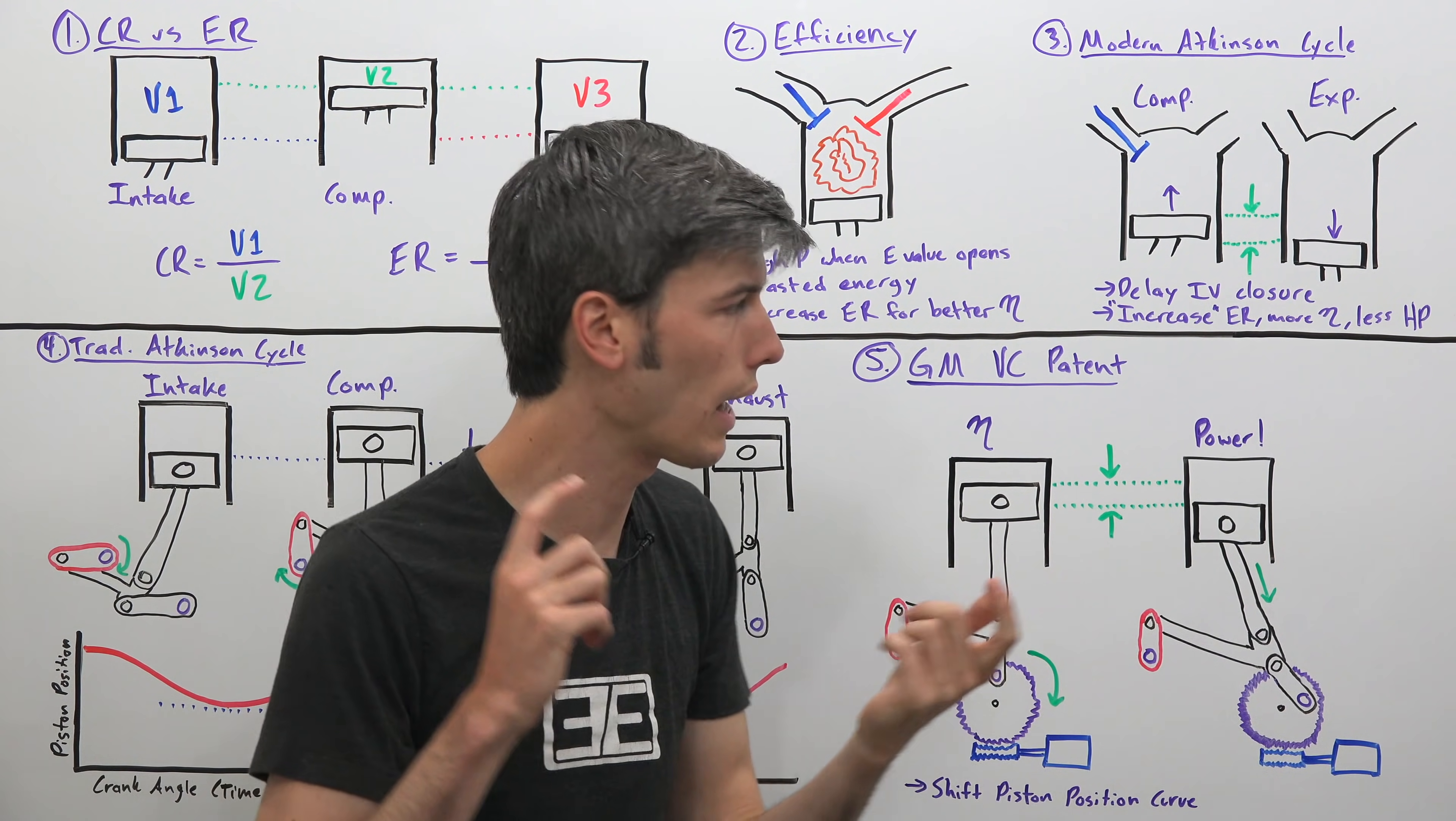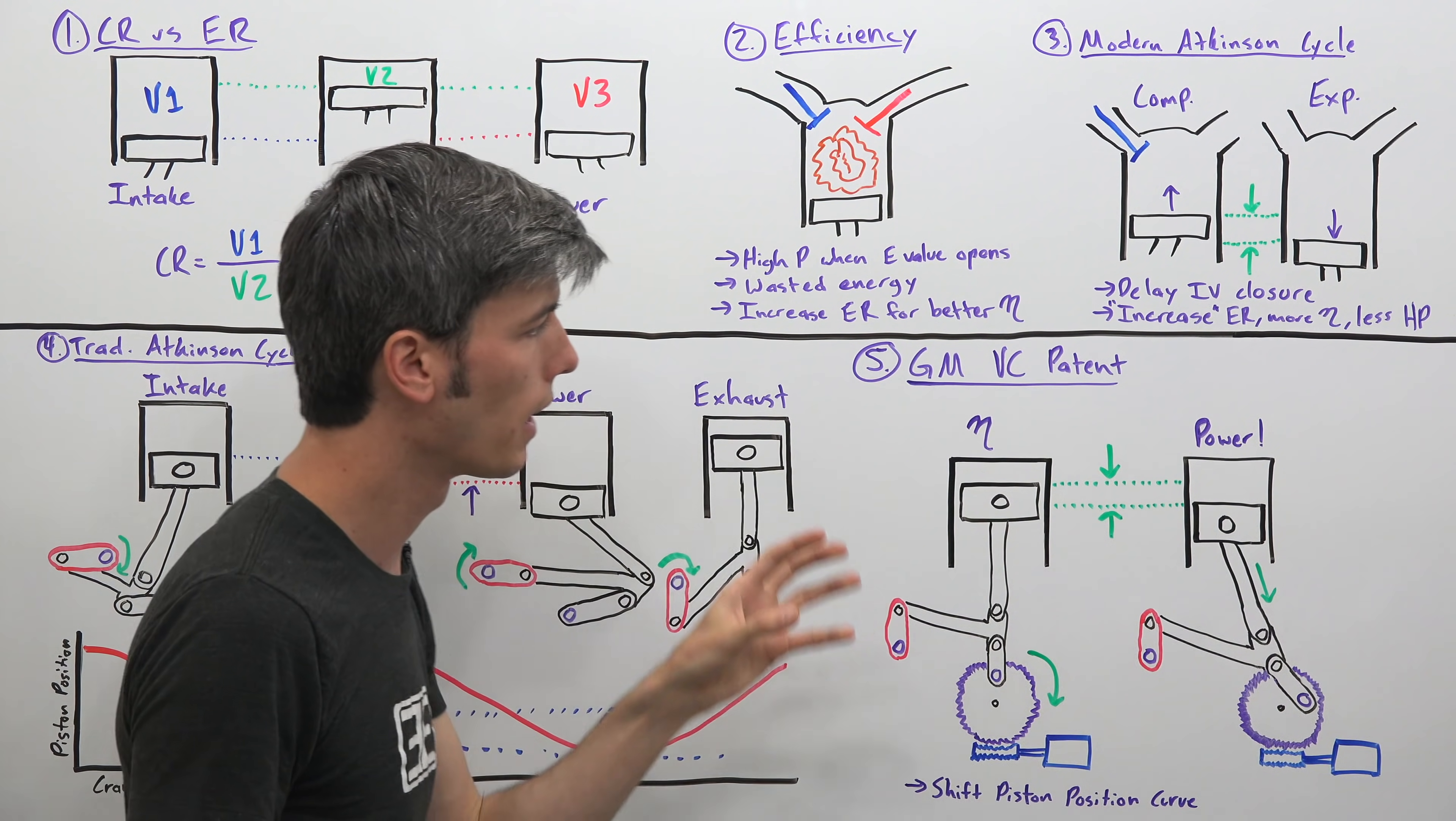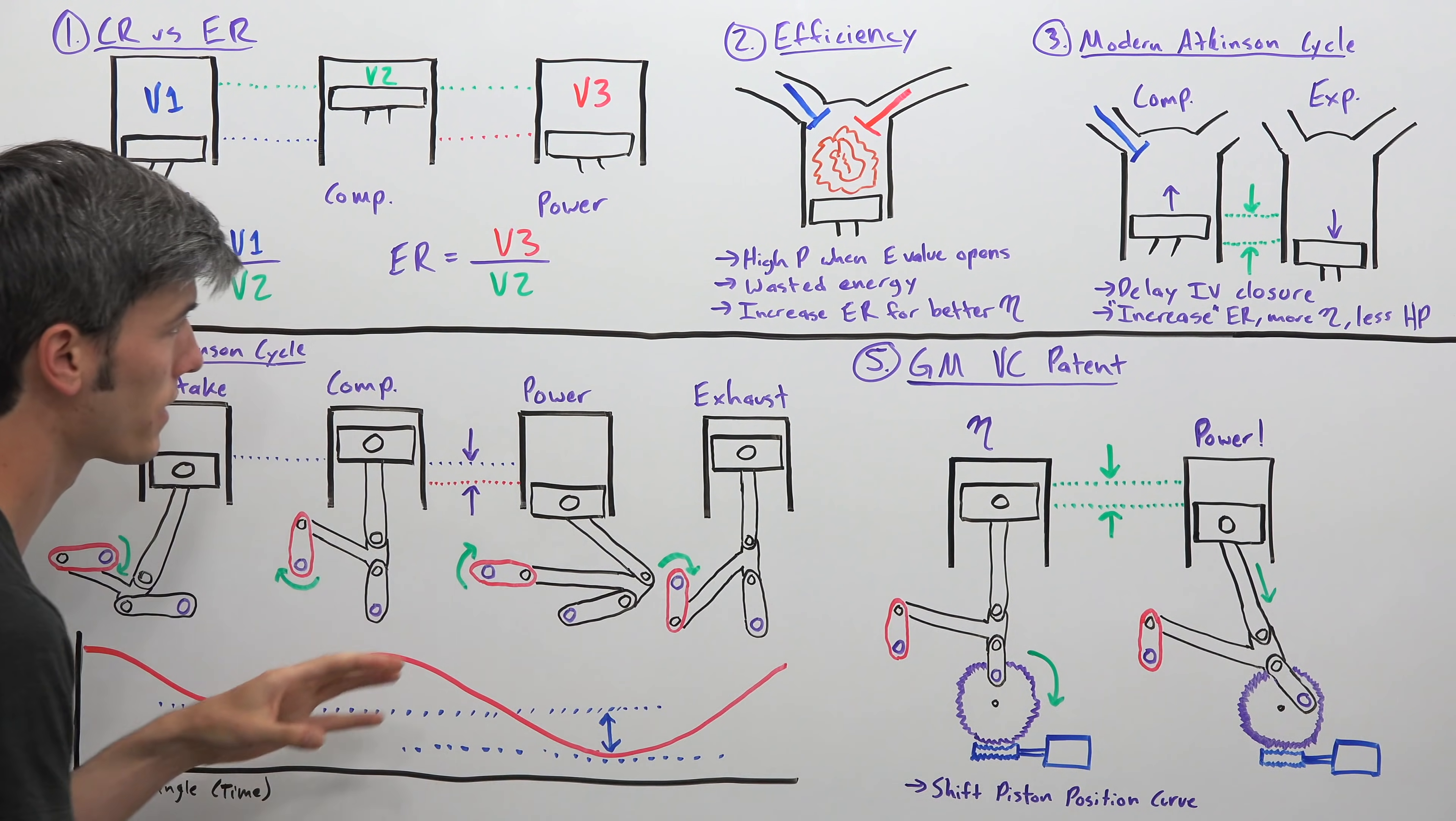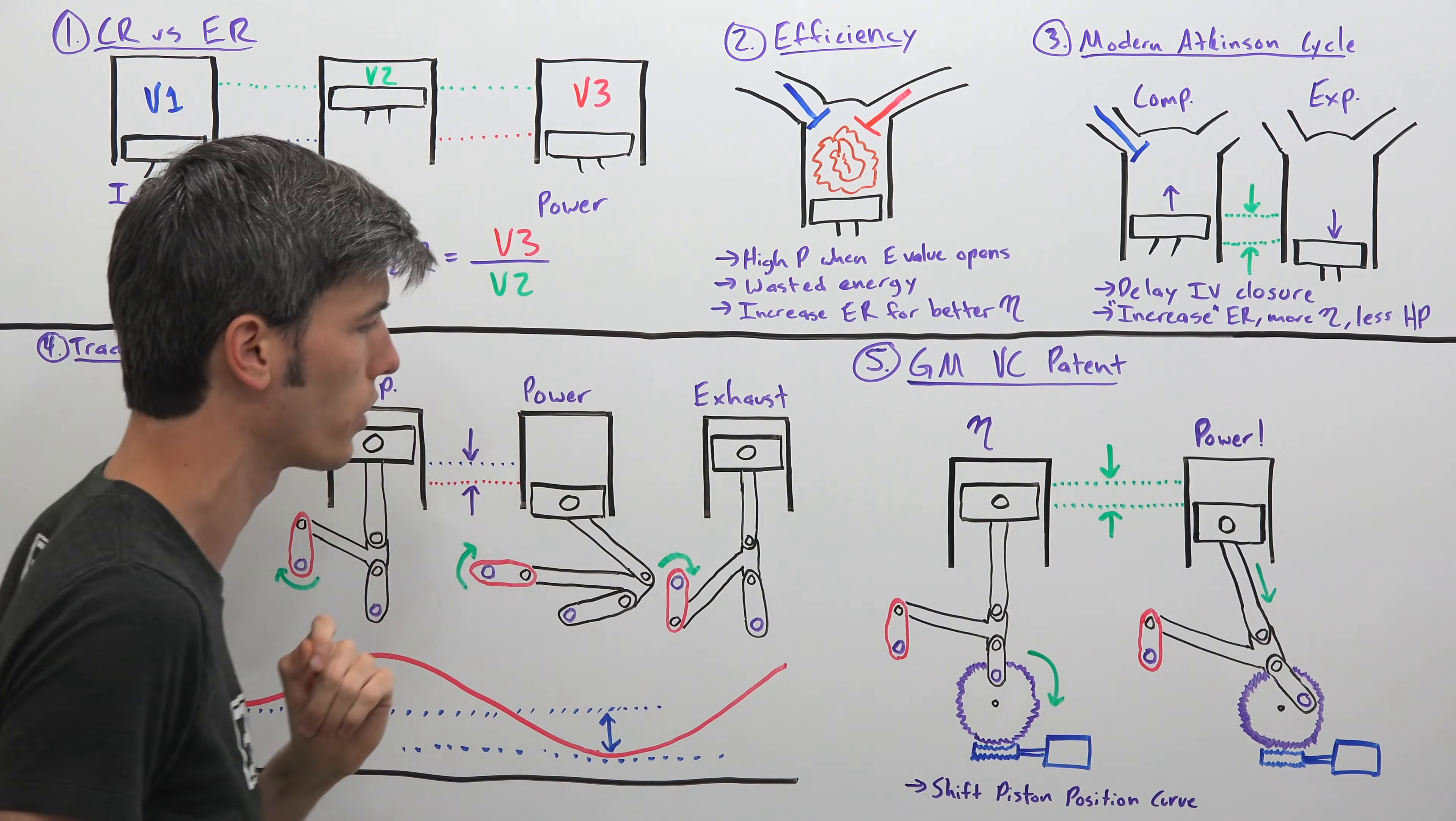Then likely the case would be you would add forced induction. And with additional forced induction, whether it's a turbocharger, supercharger, and that lower compression ratio, you don't have to worry about knock because you've decreased that compression ratio. And then you can make more power because of it. And so it's a clever solution where you have instead of kind of the modern style Atkinson cycle, you have actually a traditional style Atkinson engine, but with this modern twist on it where you have a variable compression ratio.